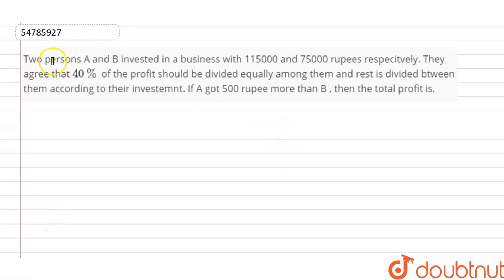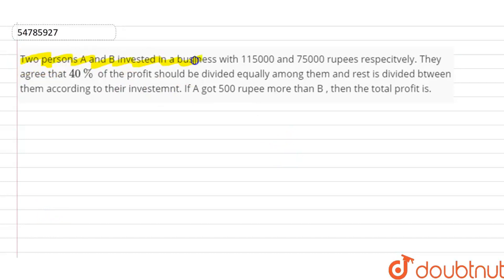Hello guys, the question is: two persons A and B invested in a business with 115000 and 75000 rupees respectively. They agree that 40% of the profit should be divided equally among them, and the rest is divided between them according to their investment. If A got 500 rupees more than B, then find the total profit.